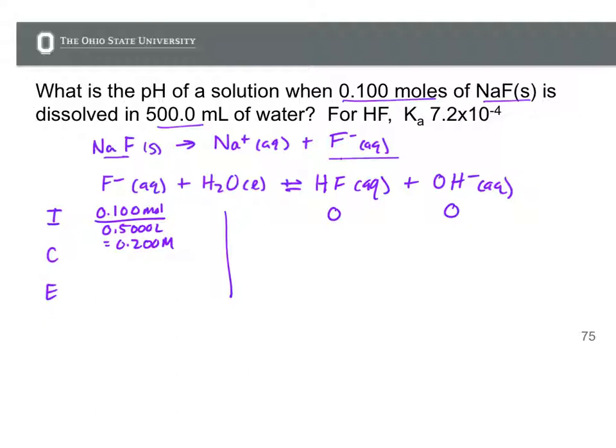Which means that for the change we're gonna have minus X on the reactant side for fluoride ion, plus X for HF and plus X for OH minus. So at equilibrium we'll have 0.2 minus X moles per liter of fluoride ion, X moles per liter of HF, and X moles per liter of hydroxide ion.